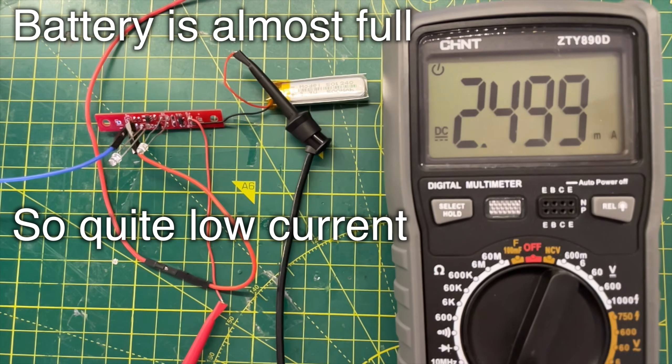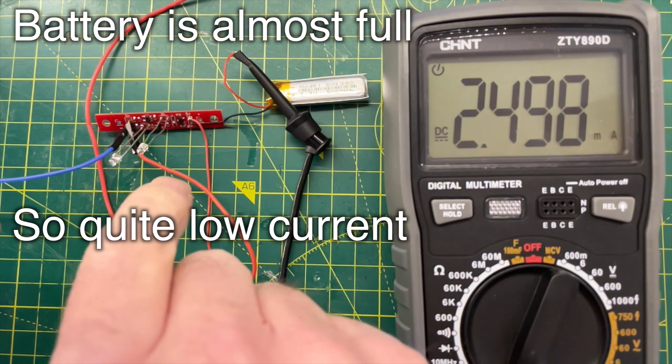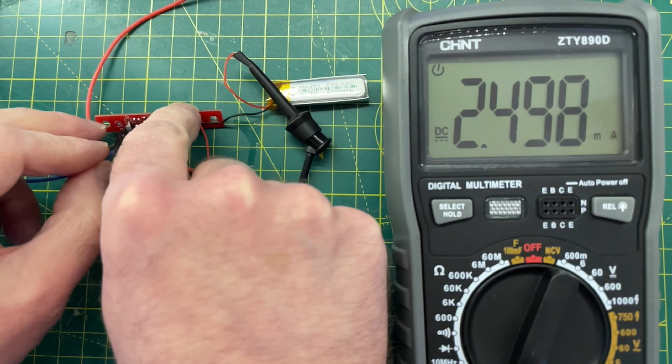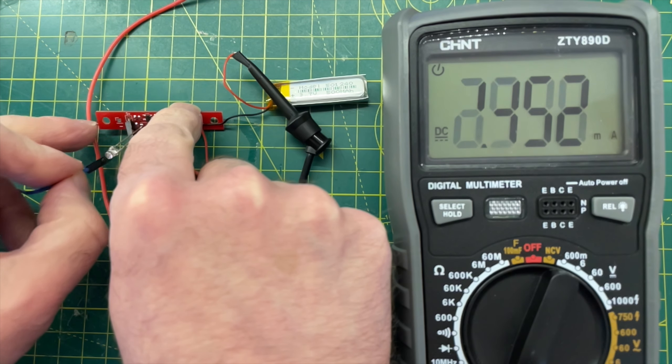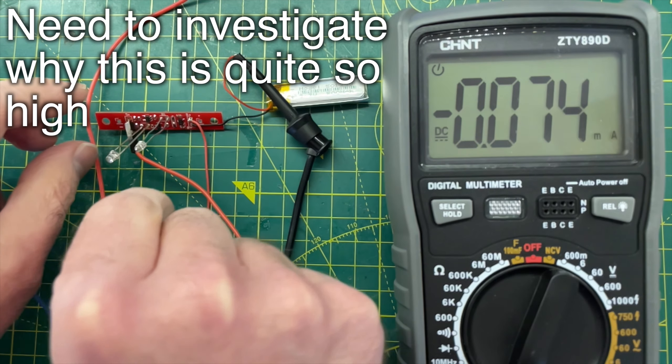I've hooked things up so I can measure the current. When we're charging, everything looks good. And if I disconnect the 5 volt supply, then the current drops down to a very low value, down to about 77 microamps. It is higher than I'd like, but our battery should last for a very long time if we leave it connected to the PCB, so that's great.